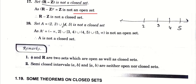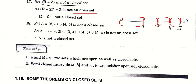एक simple example: open interval (2, 3) union {4} union (4, 5) - इसमें (2,3) open interval है, point 4, और (4,5) है। इसका complement लें तो (-∞, 2] आएगा, (2,3) के points जिनमें 3 पर closed और 4 पर open है, (4,5) और (5, ∞)। ये दोनों sets open नहीं हैं, तो union भी open नहीं होगी, तो ये closed set नहीं होगा।